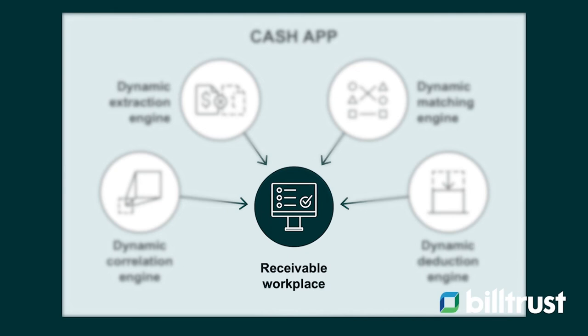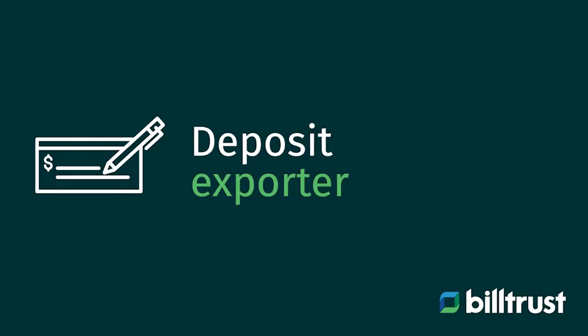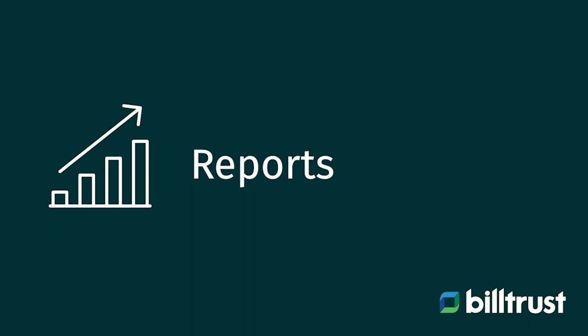After those modules are done, anything that hasn't been auto-matched by the system goes to a receivables workspace, where the AR team has the ability to manually work exceptions and justify deductions. We will send a deposit file to the financial institution for any in-house scanned checks processed with Billtrust. We also upload information to a receivables reporting workspace so your team can track productivity, tie out treasury reports, and balance payments received. There are a number of reports to help with day-to-day operations as well as month-end closing.